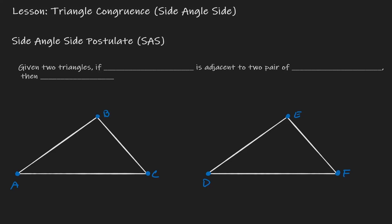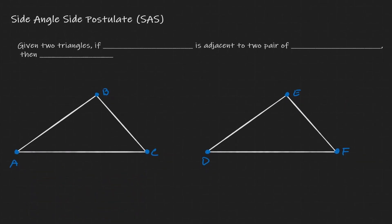Welcome. In this video, we will be discussing the idea of triangle congruency using the side-angle-side postulate. So what does the side-angle-side postulate say? Here we have two triangles, and our objective is to show that these two triangles are congruent to each other. In the past, we had to check that all sides are congruent to all the sides of the other figure and all the angles are congruent to all the angles of the other figure. That's a lot of work, so the side-angle-side postulate can be seen as a shortcut to show that two triangles are congruent.